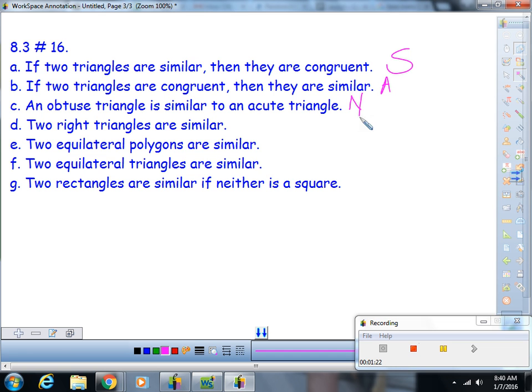Part D: Two right triangles are similar. I can think of an example—let's say they were isosceles right triangles. Those would be similar. I can also think of an example of a right triangle that is definitely not similar to this.